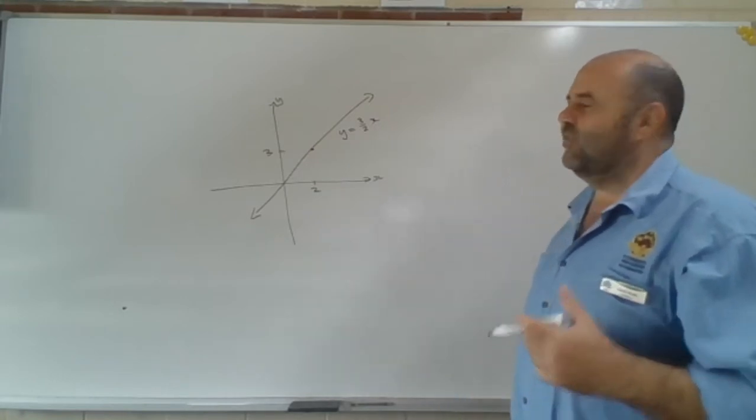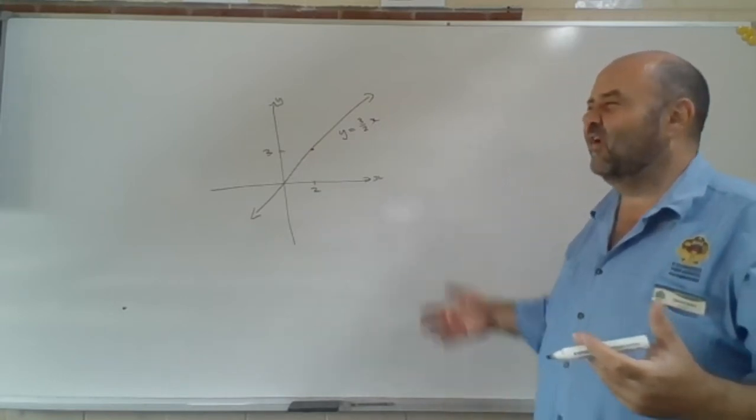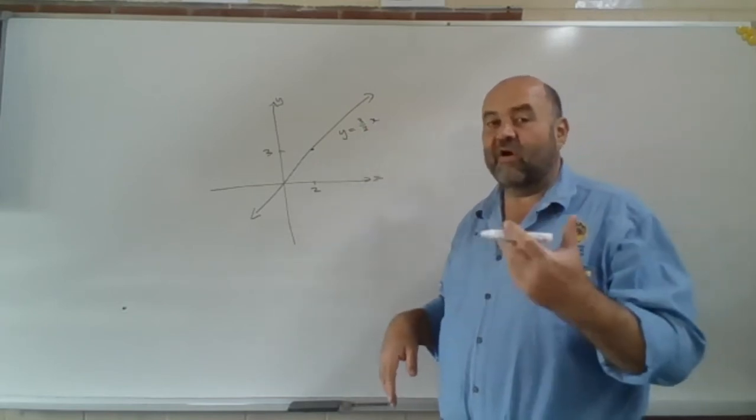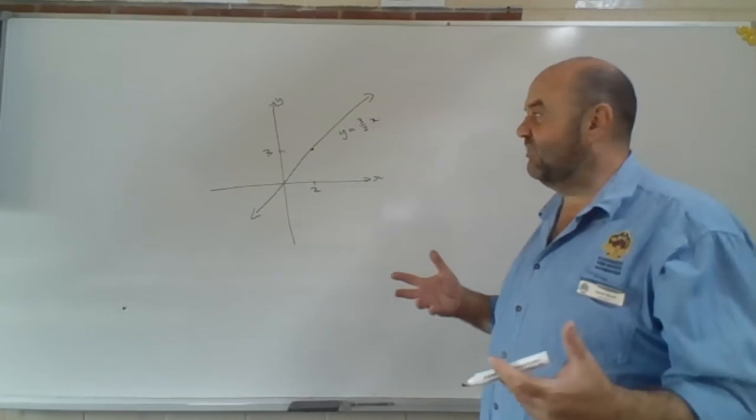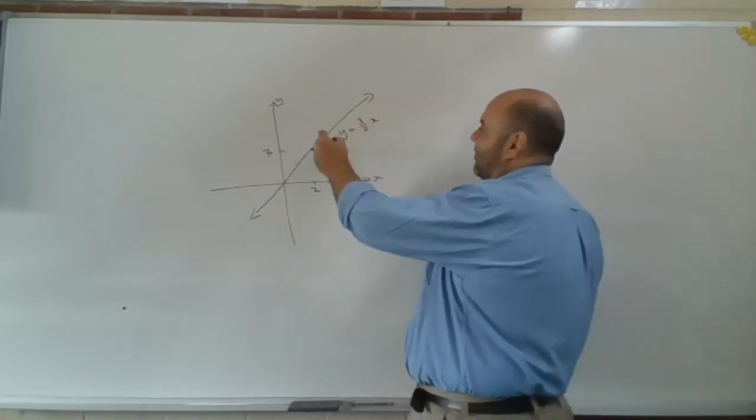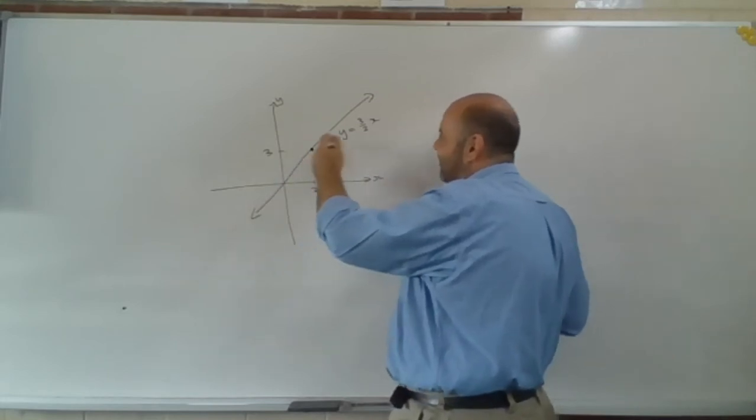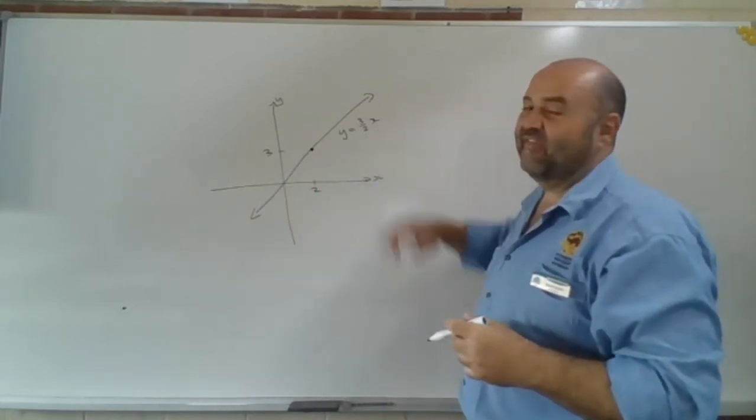Notice the language that I said. So the equation of the line is y equals 3 over 2x. But the line itself is every point. The line is a collection of points, and it's every point that obeys that.